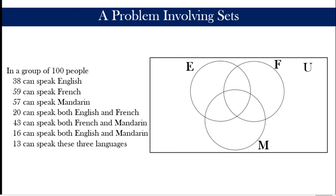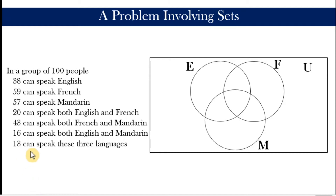An important strategy is to start from the last given data rather than the first. Why? Because from the 38 people who can speak English, it is possible they also speak other languages. That statement only tells us there are 38 who can speak English, but does not say whether some of them also speak French or Mandarin.